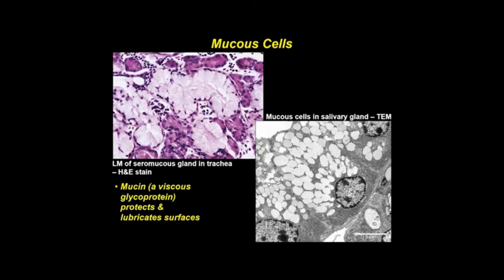Mucus, a secretion consisting of mucin — a highly viscous glycoprotein — protects and lubricates surfaces. Mucus-producing cells occur either singly as goblet cells in epithelia of the digestive, respiratory, and reproductive tracts, or are grouped as tubules or acini in many glands. Rough ER and the nucleus are basally located, and mucus-containing secretory vesicles predominate in their apical cytoplasm.